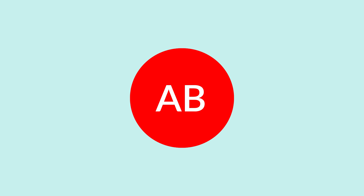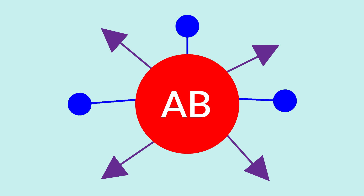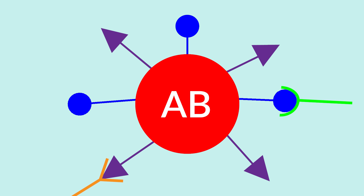The AB blood type is unique. It has both A and B antigens present on the outside surface of the cell. This means that because the A and B antigens are present, no A or B antibodies should be present. If they were, they would bind and kill the RBCs. So if an individual is blood type AB, there are no A or B antibodies present in their plasma.